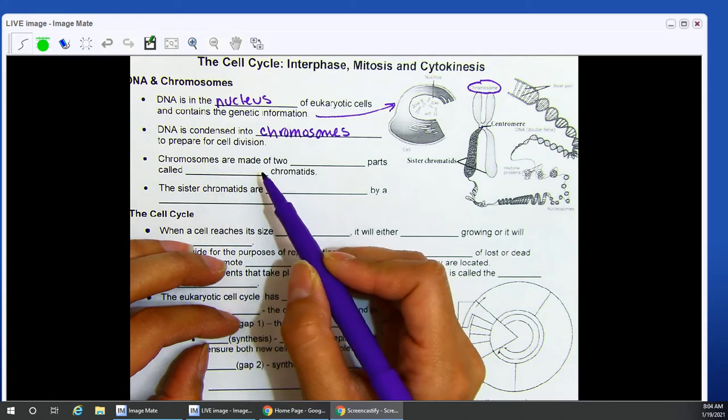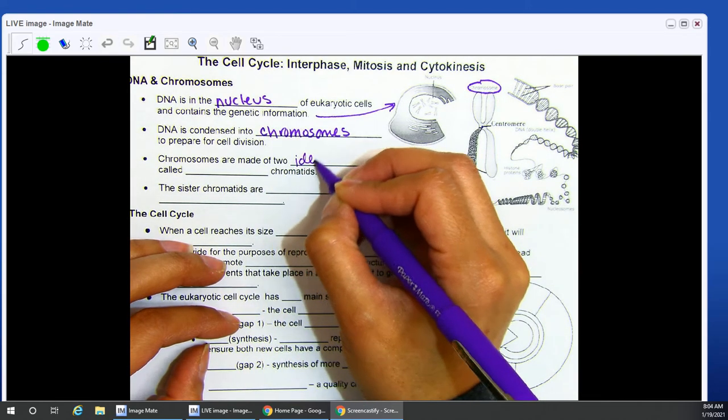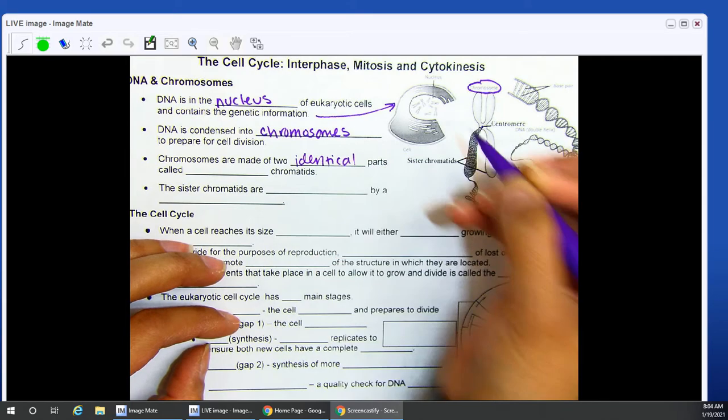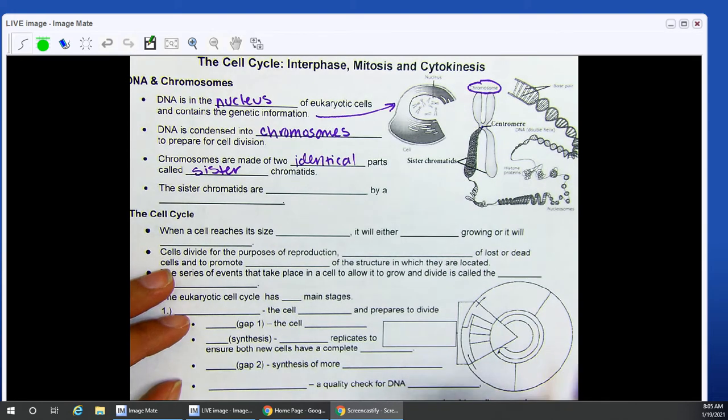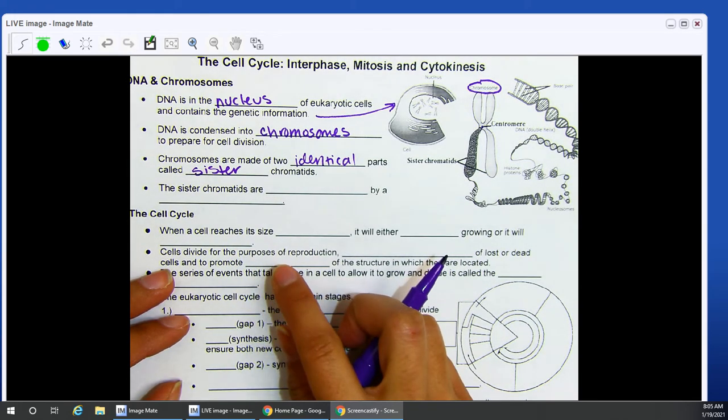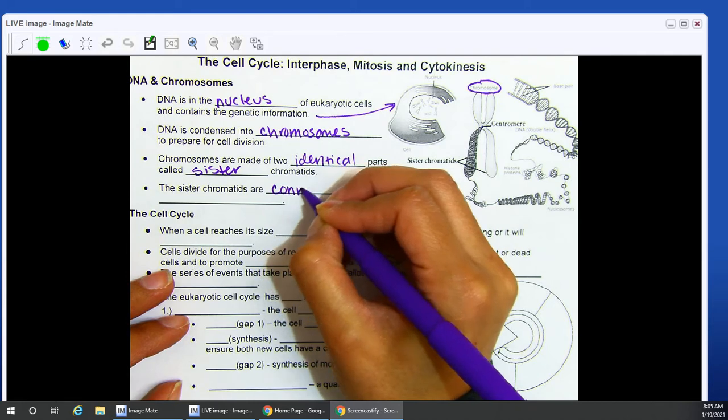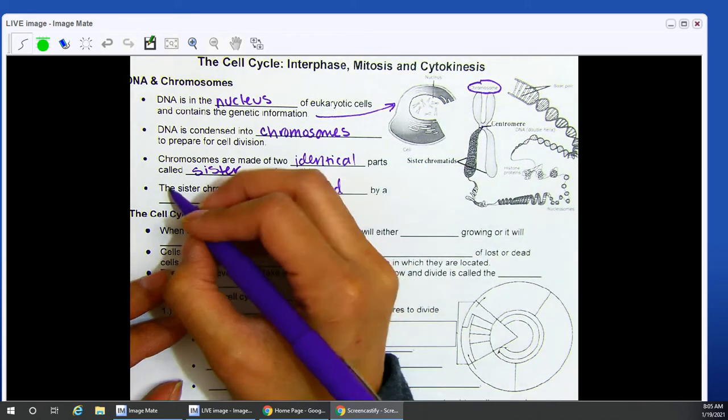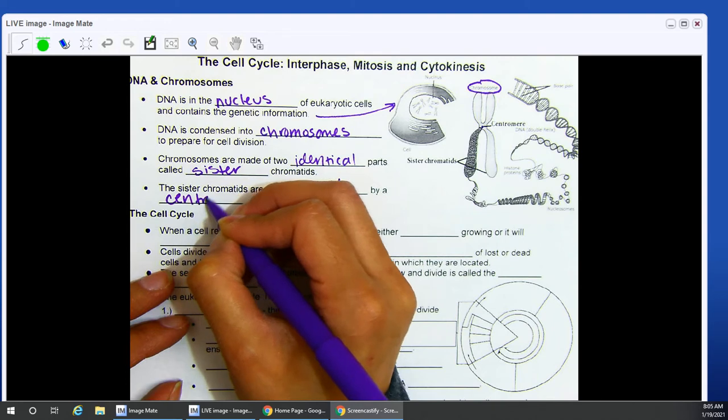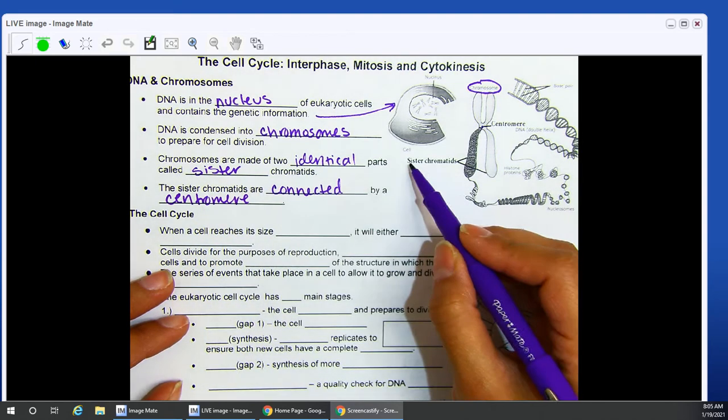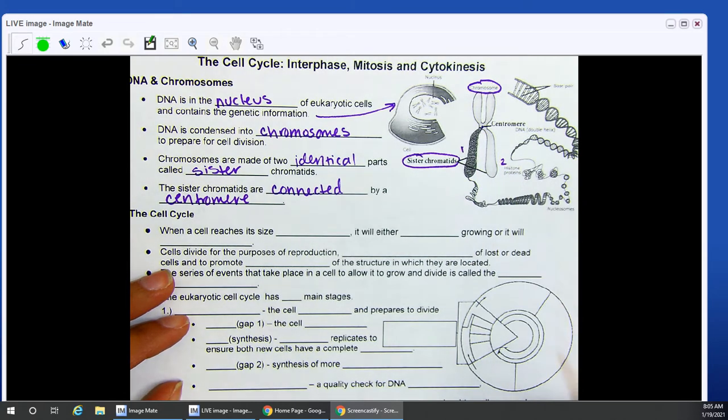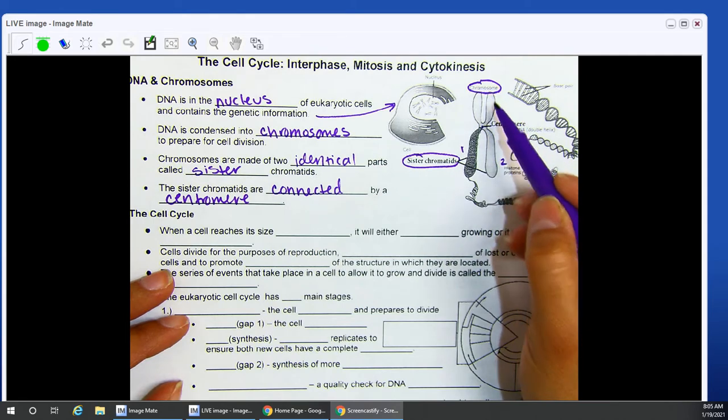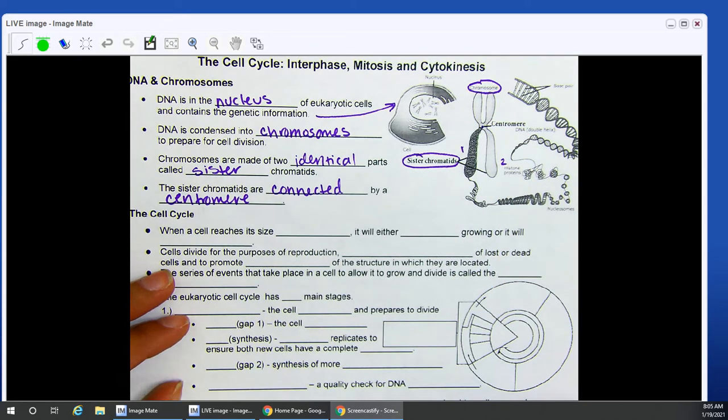Notice here on the right-hand side, this helix shape. This is how your genetic information is normally situated in a double helix. However, instead of having these really long strands all over the place, we're going to tighten it up, wind it up really tightly so that it's all easier to access during cell division. Chromosomes are made of two identical parts, and we call these sister chromatids. The sister chromatids are connected by the centromere.